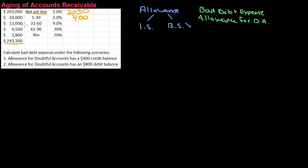I have $13,000 that is 31 to 60 days overdue. And 9% of that is probably uncollectible. All of these percentages are based on the company's previous history. So what they do is they look at previous history and decide how much is not collectible. So if I take $13,000 times 9%, that's $1,170.